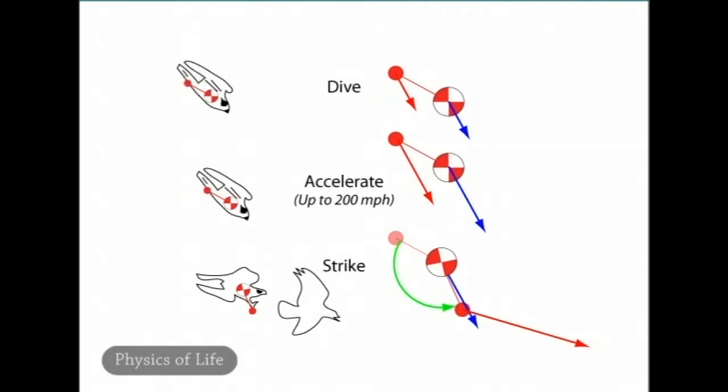The blow is powerful enough to kill a bird many times larger than the falcon. Peregrines have been known to kill red-tailed hawks, for example. And they do it with physics.